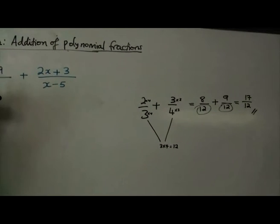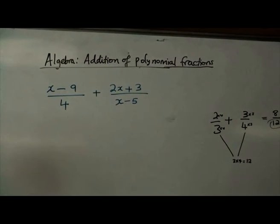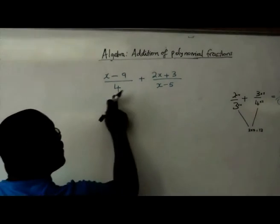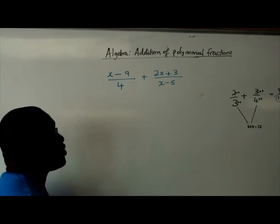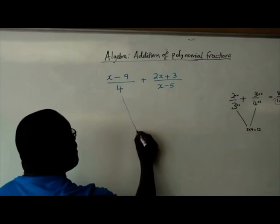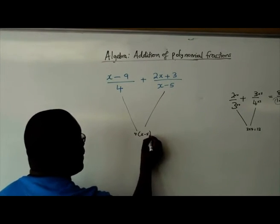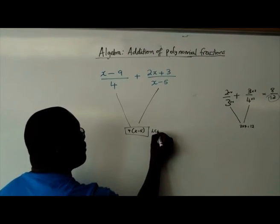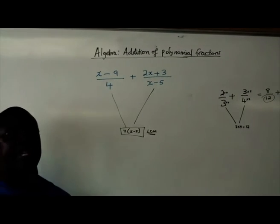The existence of an x should not scare you because it's the same thinking altogether. Let us look at these two denominators. They are not the same. What we're going to do is multiply 4 multiplied by x minus 5. This is our lowest common multiple. That's the lowest common multiple of the two denominators.